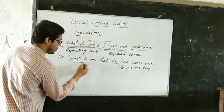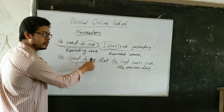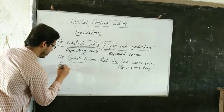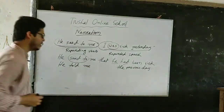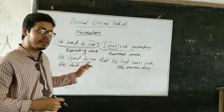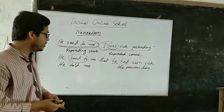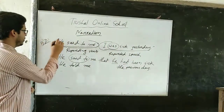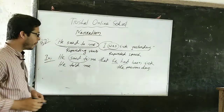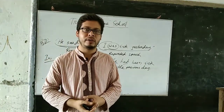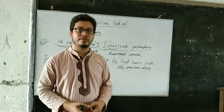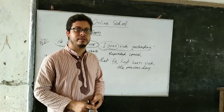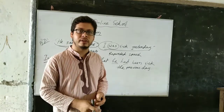You can also change 'said to' — if there is an object after the verb, you can change 'said' to 'told.' So you can also write: 'He told me that he had been sick the previous day.' Both are correct. If you write 'he told me that' it is correct, and if you write 'he said to me that' it is also correct. In this way you change from direct to indirect narration.